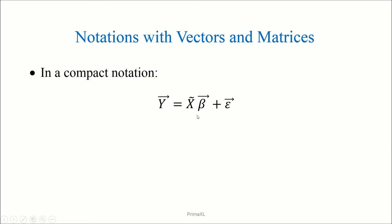We can rewrite the linear model in a much more compact notation. The y vector contains the observed values of the y variable. The x matrix contains the observed values of the x variables. The beta vector is the solution we are trying to get. Finally, the epsilon vector contains the errors.